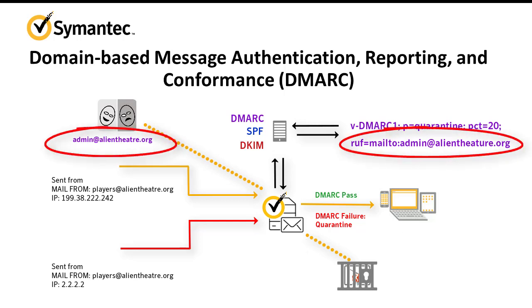If DMARC sender reports are enabled and DMARC authentication fails, Semantic Messaging Gateway sends a DMARC report to the email address in the sender's DNS record. This allows the sender to track patterns of DMARC failures, and when indicated, investigate whether the sending domain is being spoofed.